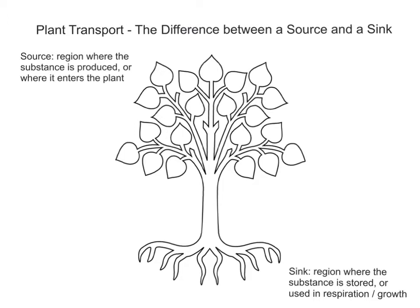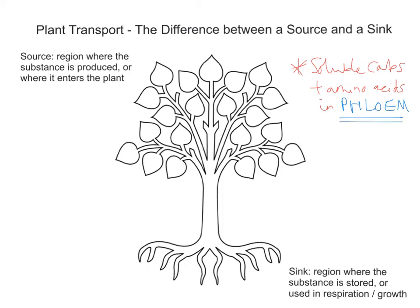So let's just make a little note of that to begin with. This topic revolves around the transport or movement of soluble carbohydrates — so soluble carbs, to include glucose and sucrose — plus amino acids, and what's really key is that this is taking place in the phloem, so part of the vascular bundle. Let's look at what a source and sink actually are in relation to translocation.